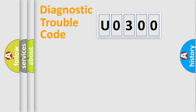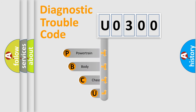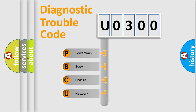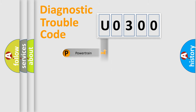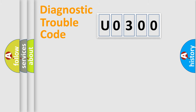First, let's look at the history of diagnostic fault code composition according to the OBD2 protocol, which is unified for all automakers since 2000. We divide the electrical system of the automobile into four basic units: Powertrain, Body, Chassis, and Network. This distribution is defined in the first character of the code.